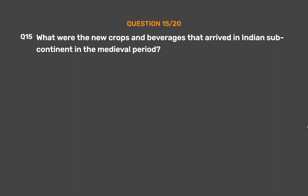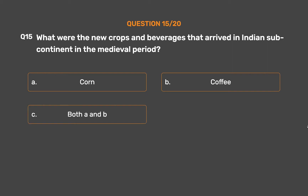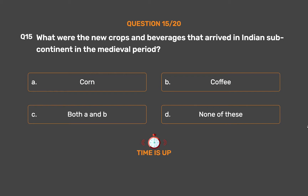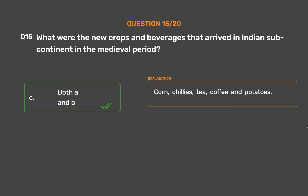Question 15: What were the new crops and beverages that arrived in the Indian subcontinent during the medieval period? Option A: Tea. Option B: Coffee. Option C: Both A and B. Option D: None of these. The correct answer is Option C: Both A and B. New arrivals included corn, chilies, tea, coffee, and potatoes.